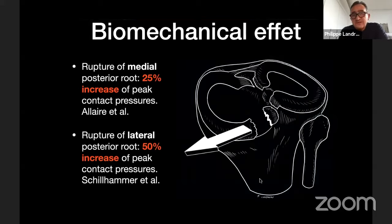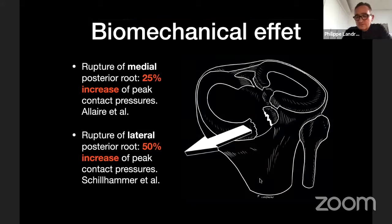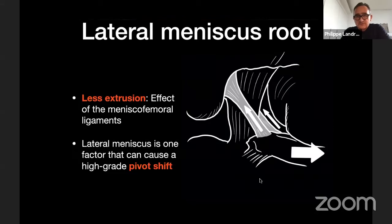The rupture of the medial posterior root increases peak contact pressure on the tibial plateau by 25%, and even more for the lateral meniscus — up to 50%. You can imagine the biomechanical effect without repair, and the two cases presented are typical examples of the osteoarthritis that can happen after this kind of lesion.